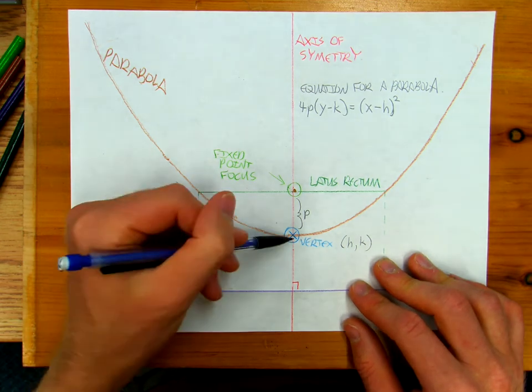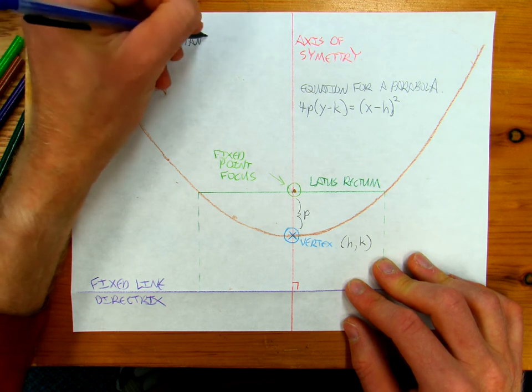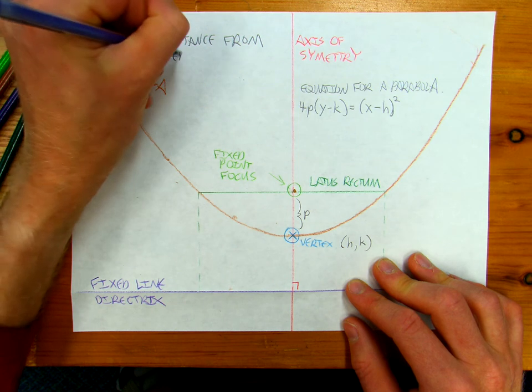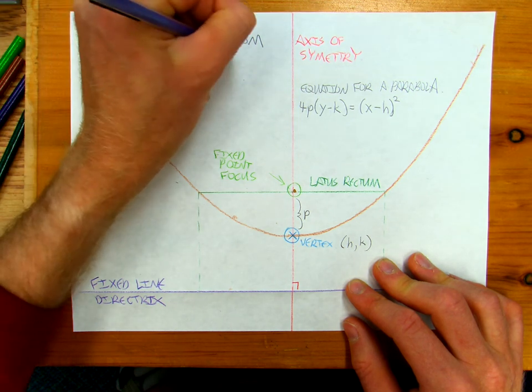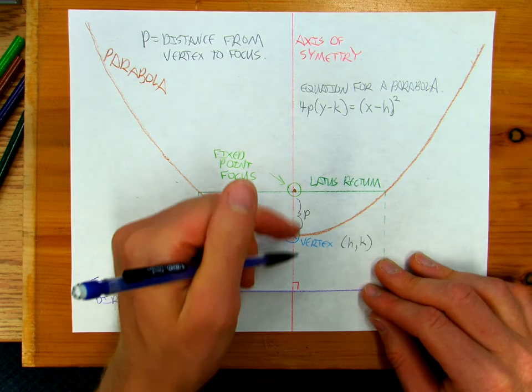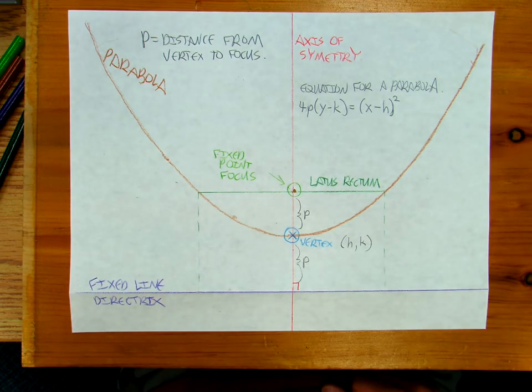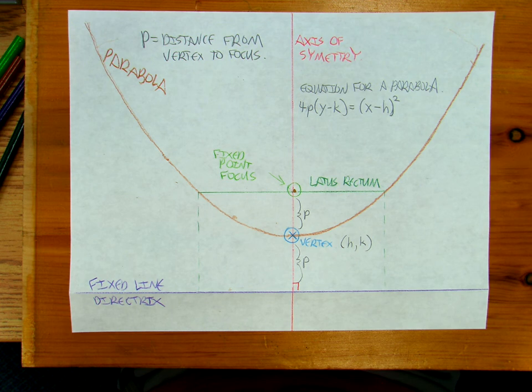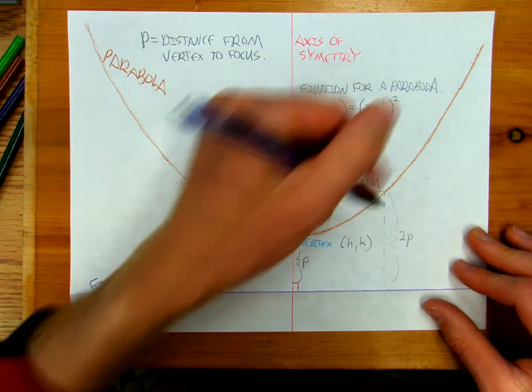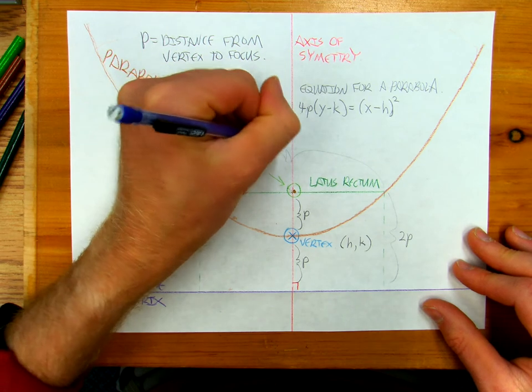This distance here is p. So the distance from the vertex, p is the distance from the vertex to the focus. Well, but it's also that's also p. And so if you think about it, this is 2p, and that distance there is going to be 4p.